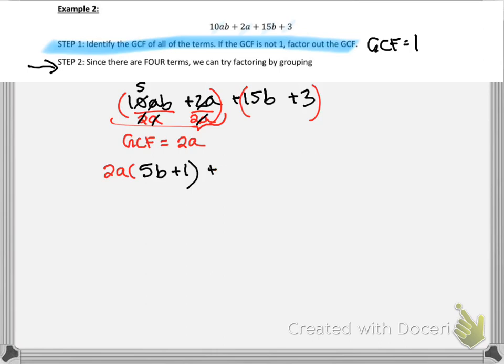We need to do the same thing over here with these other two terms, see what they have in common. It looks to me like the GCF is 3. And remember, you can feel free to pause these videos if it's going too fast for you, or you can speed them up if it's going too slow. So 15B divided by 3 is 5B. 3 divided by 3 is 1.